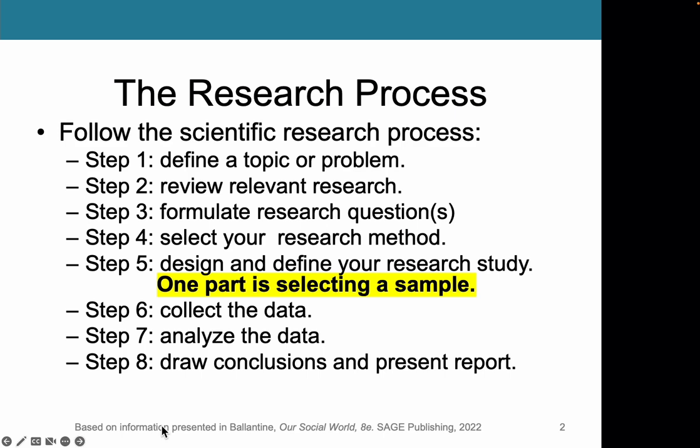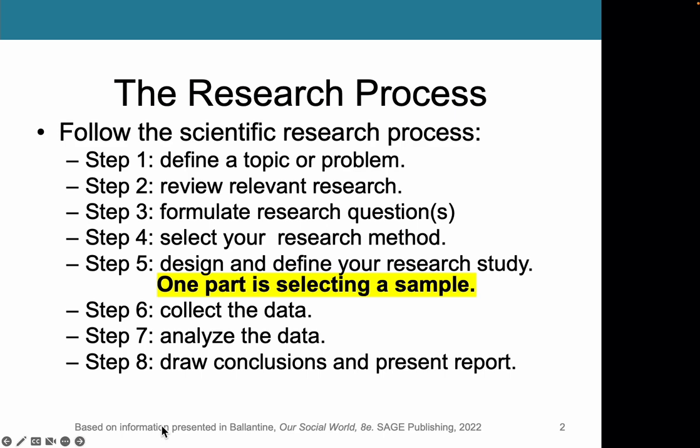This is just a quick reminder of what the research process is. The research process follows the scientific research method. Step one is that you define a topic or a problem. Step two, you review all relevant research. As you're conducting research on your master's thesis or dissertation, you'll be spending a significant amount of time doing background research. You'll formulate your research question or questions, and then you'll select your research method based on your research question — whether quantitative or qualitative.